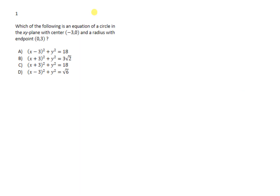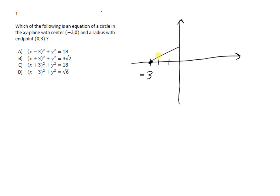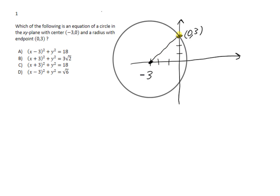Here's a fairly typical medium-to-hard difficulty problem. It says: which of the following is an equation of a circle in the xy-plane with center (negative 3, 0) and a radius with endpoint (0, 3)? They're giving me the center straight away — negative 3 comma 0 — and telling me that one of the radii has an endpoint at (0, 3). So I plot the center and the endpoint of the radius.